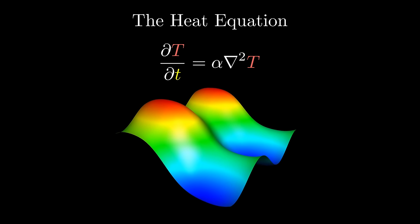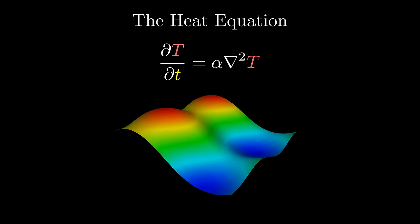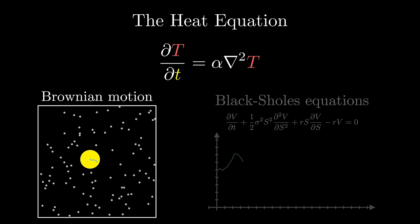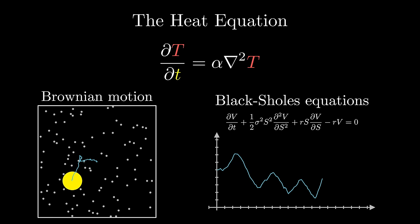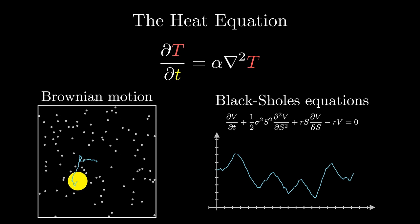Variations of the heat equation show up in many other parts of math and physics, like Brownian motion, the Black-Scholes equations from finance, and all sorts of diffusion, so there are many dividends to be had from a deep understanding of this one setup.